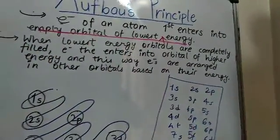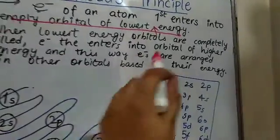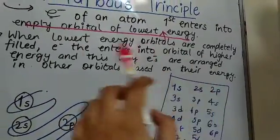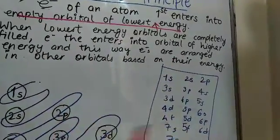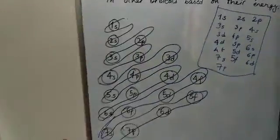when lowest energy orbitals are filled completely, then the electrons enter into orbital of higher energy and this way, electrons are arranged in other orbitals based on their energy. This is the way how you do it.